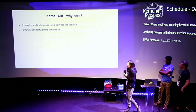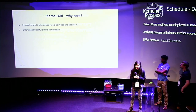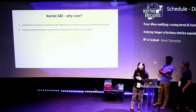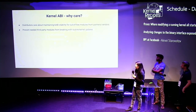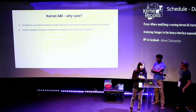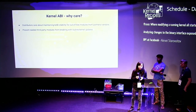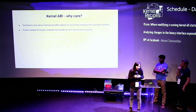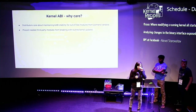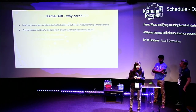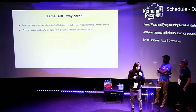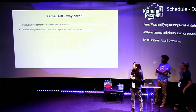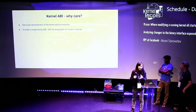So why do we care about kernel ABI? In a perfect world, we'd have all modules and drivers in-tree and upstream. But reality is more complicated. Linux distributors care about maintaining kernel KBI stability for primarily out-of-tree modules from partners and vendors. The main goal is to prevent third-party modules from breaking with routine kernel updates. If you're dependent on a hardware driver from a vendor that's not upstream, it would be really bad if your system doesn't boot after a kernel update. Maintaining kernel ABI stability also allows decoupling kernel and module development, and provides a single kernel ABI for an ecosystem of vendor and partner modules.